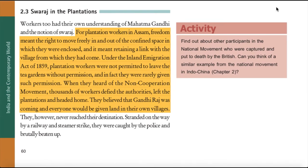Swaraj in the Plantations. Workers too had their own understanding of Mahatma Gandhi and the notion of Swaraj. For plantation workers in Assam, freedom meant the right to move freely in and out of the confined space in which they were enclosed and to retain a link with the village from which they had come. Under the Inland Emigration Act of 1859, plantation workers were not permitted to leave the tea gardens without permission. When they heard of the non-cooperation movement, thousands of workers defied the authorities, left the plantations and headed home, believing that Gandhi Raj was coming and everyone would be given land in their own villages. However, they never reached their destination; stranded on the way by a railway and steamer strike, they were caught by the police and brutally beaten up.